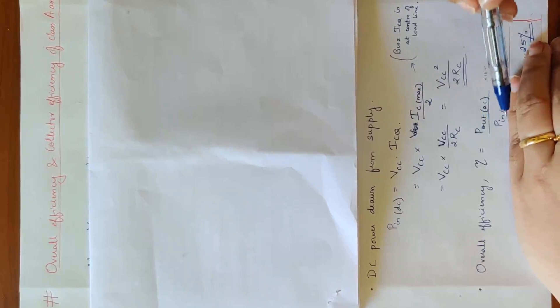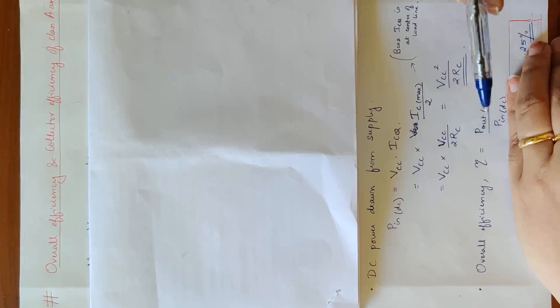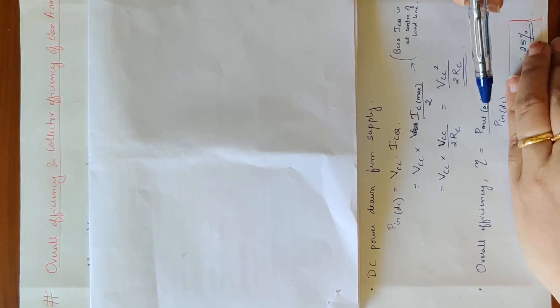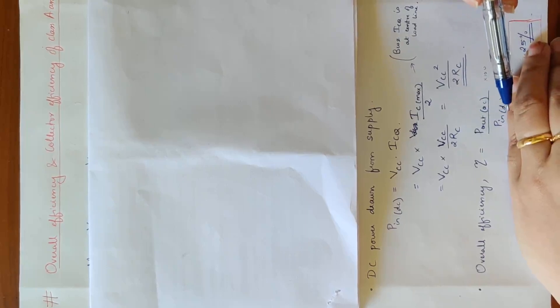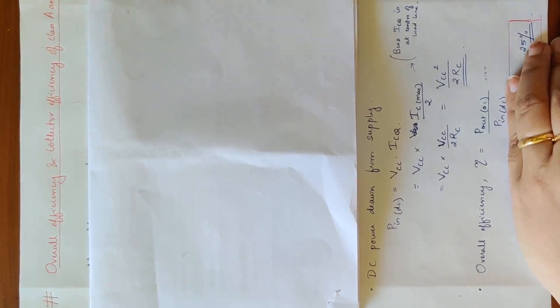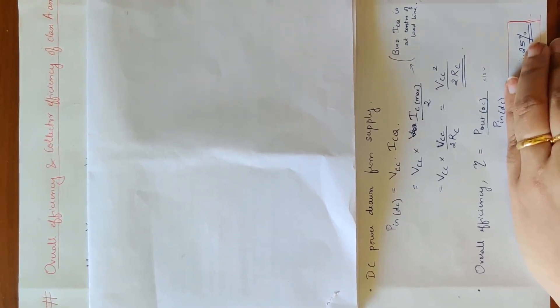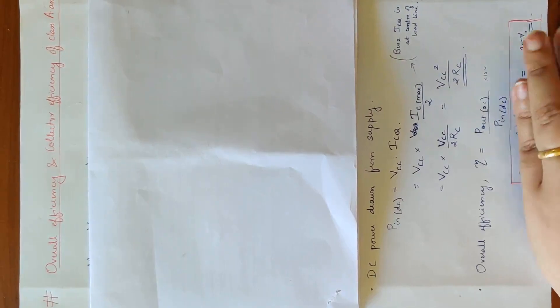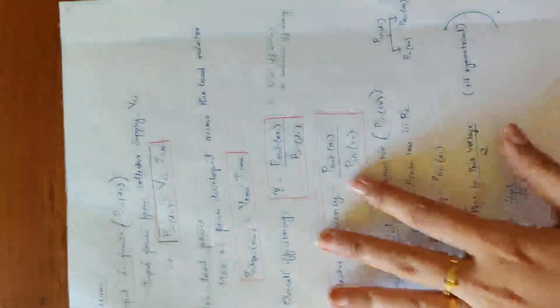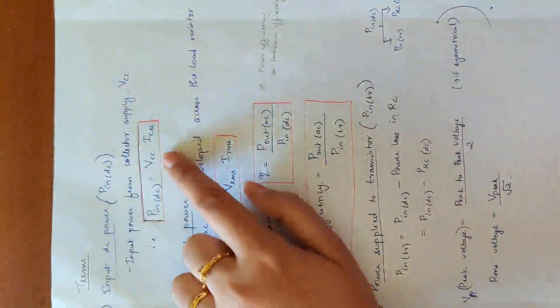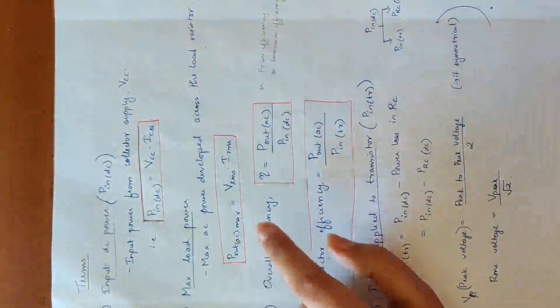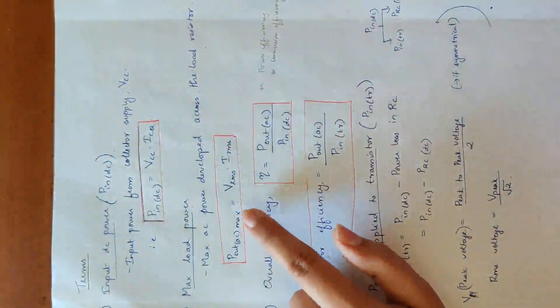Now we state the efficiency equation. Output AC power is P_out_AC, and we are deriving the equations for P_in_DC. P_in_DC equals VCC into ICQ, and output AC power is the AC output.